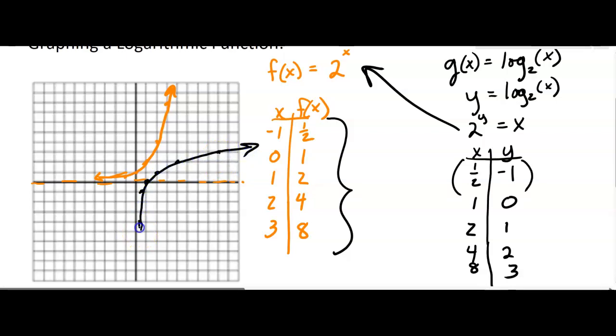If we graph it, it's going like that. Notice that there's a vertical asymptote on the y-axis.